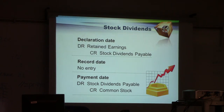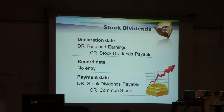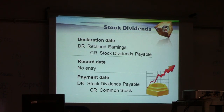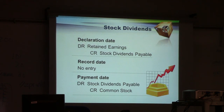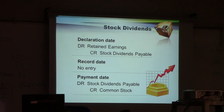On the declaration date for stock dividends, you debit retained earnings and credit stock dividends payable. Record date has no journal entry. On the payment date, you debit stock dividends payable and credit common shares — not cash. When you credit common shares, common shares goes up. Both cash and stock dividend journal entries are similar in structure but different: stock dividends increase the number of shares issued, while cash dividends only issue cash.